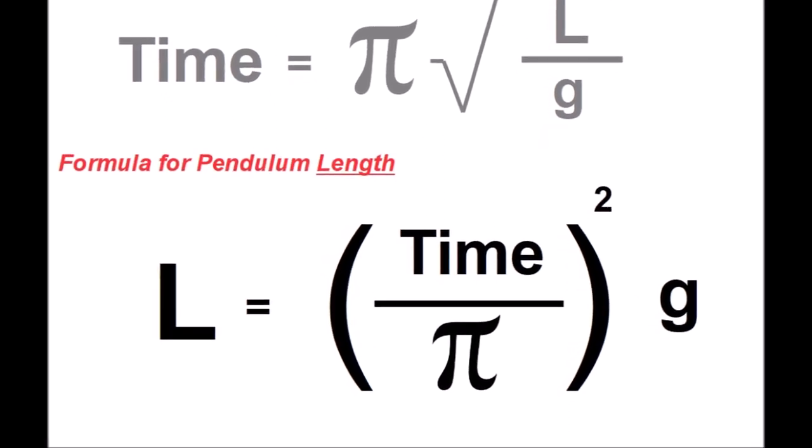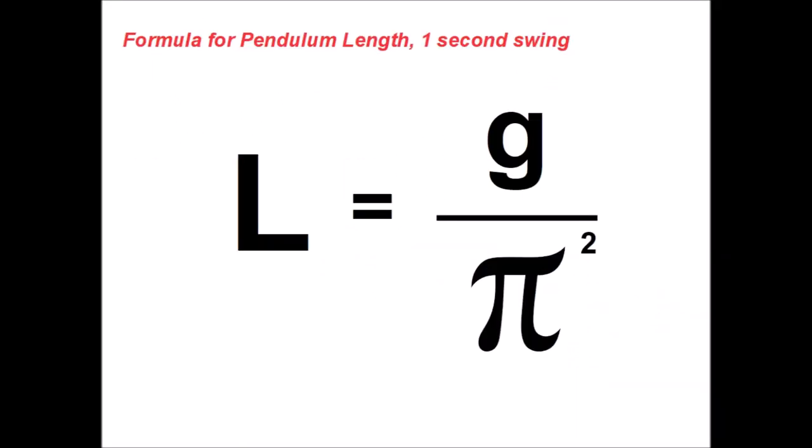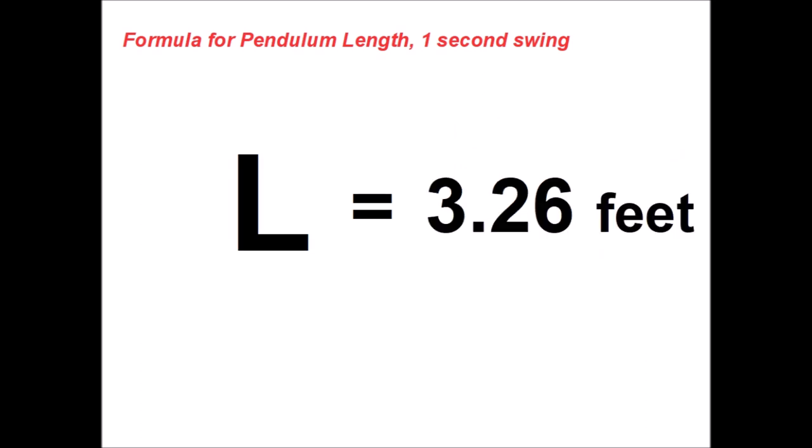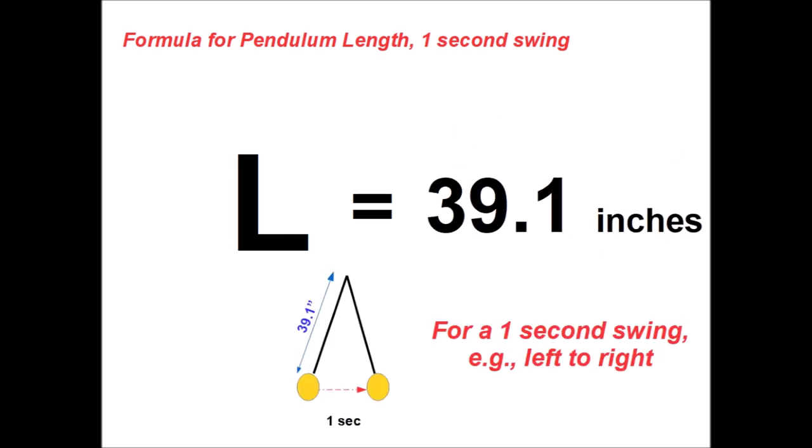Flipped around, length is a function of time. For a one-second swing, length is g over pi squared. Length for a one-second swing is 32 over 3.14 squared, which is 3.26 feet or 39.1 inches.